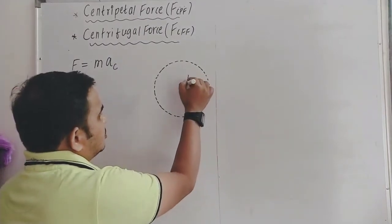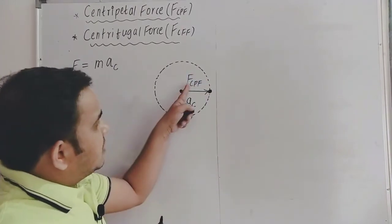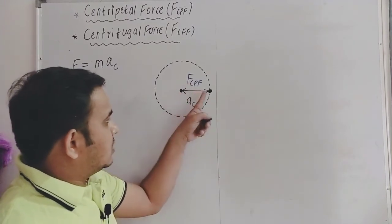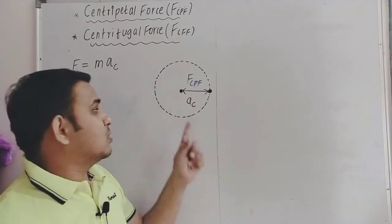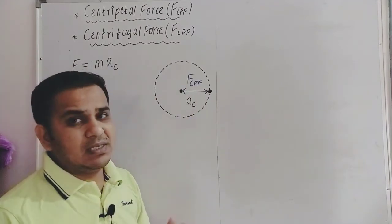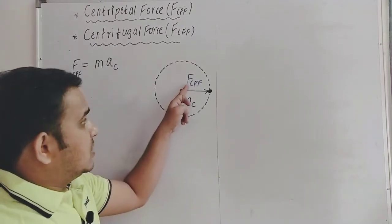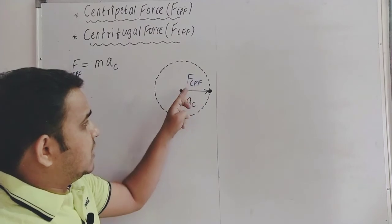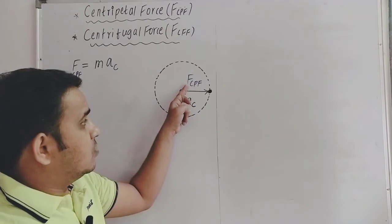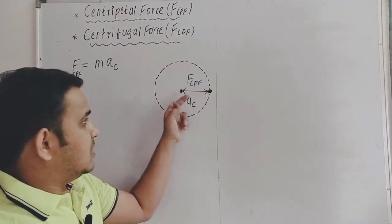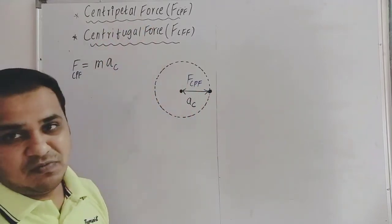So we can easily define centripetal force. Centripetal force is a force which is acting along the radius and directed towards the center. When a particle is performing circular motion, the force on the particle which is along the radius and directed towards the center of the circular path is called centripetal force.